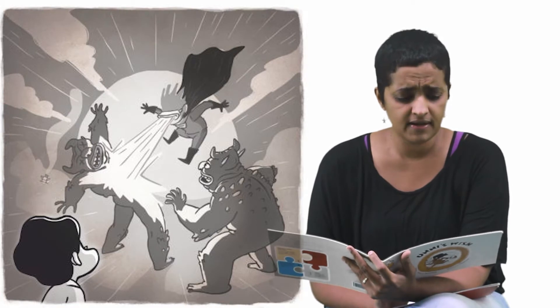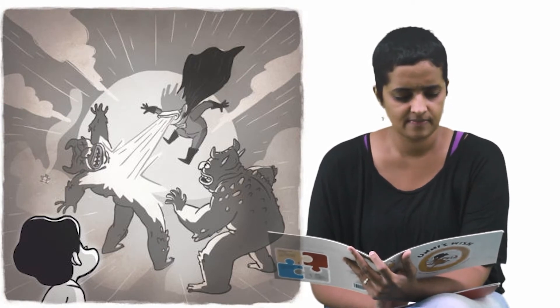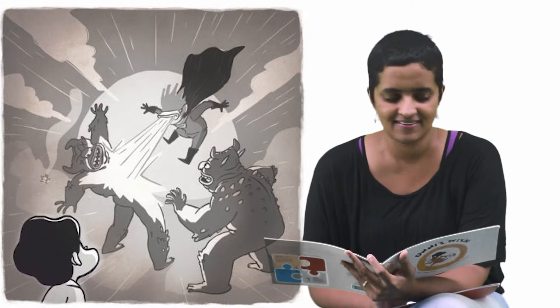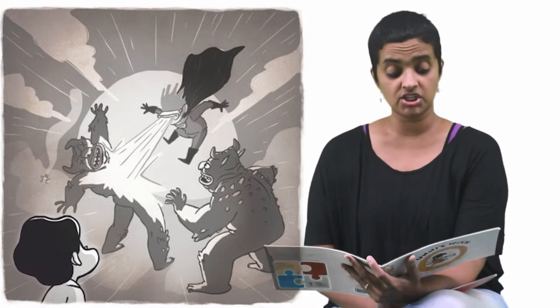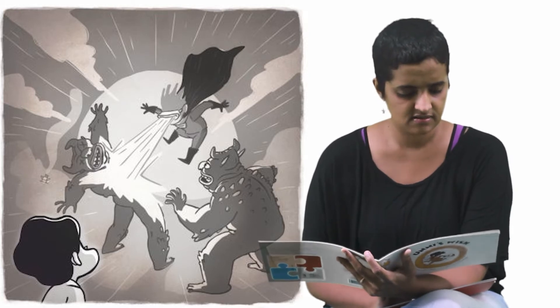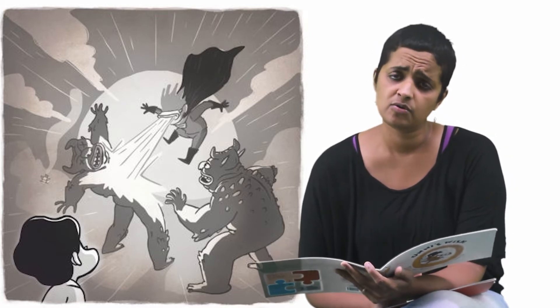Unni listens to Ammu humming a tune as they walk to class. It's from her favorite cartoon show on TV. The boy in the cartoon fights villains using his magic glasses, she explains. Unni wonders when he will have a TV at home.